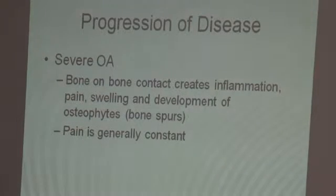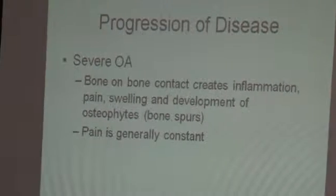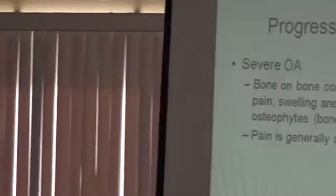Severe arthritis is bone-on-bone contact, which does create inflammation. Imagine a car running with no oil - the car can't run. We get pain and swelling and may develop an osteophyte - that's when a bone decides to change shape. Through all the pressure on the joint, the bone comes under pressure and starts to splinter out, forming bone spurs. The pain is generally constant, and if you're in this phase, it's difficult to get back from. The case is manageable, but difficult to correct.